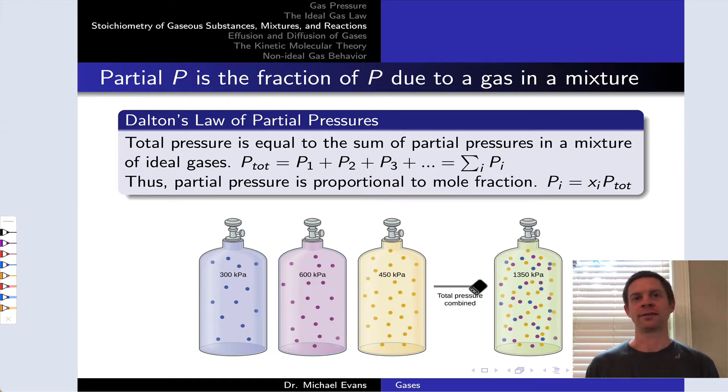What happens when I take two gases, A and B, say they're in two separate balloons, and I combine both gases in a balloon at the same volume as the two separated balloons? What's the pressure inside? Dalton's law of partial pressures provides an answer to this question, and the answer is quite simple.